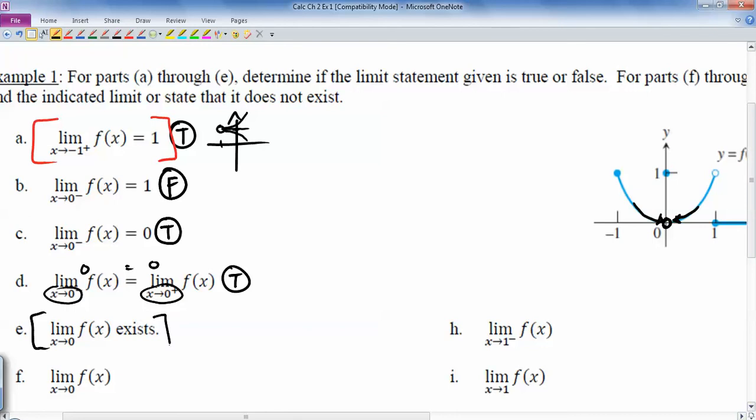This idea right here, limit as x goes to 0 of f of x exists. The way that we define a limit with no sides associated with it, like just some value a of f of x, as long as a is not an infinity or negative infinity, then we would just say this exists if each one-sided limit, so a from the left of f of x, if that's exactly the same thing as the one from the right. And that's what we have. So we would say this is true.